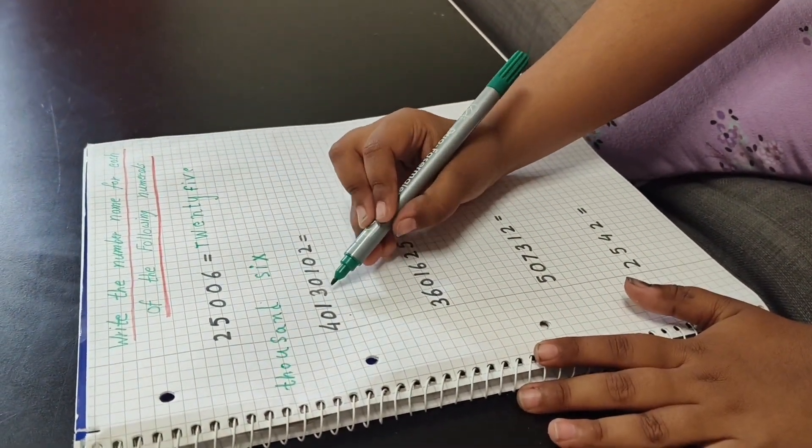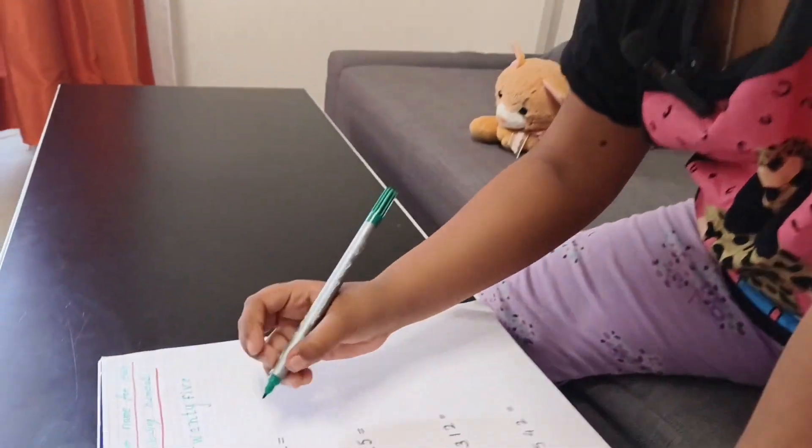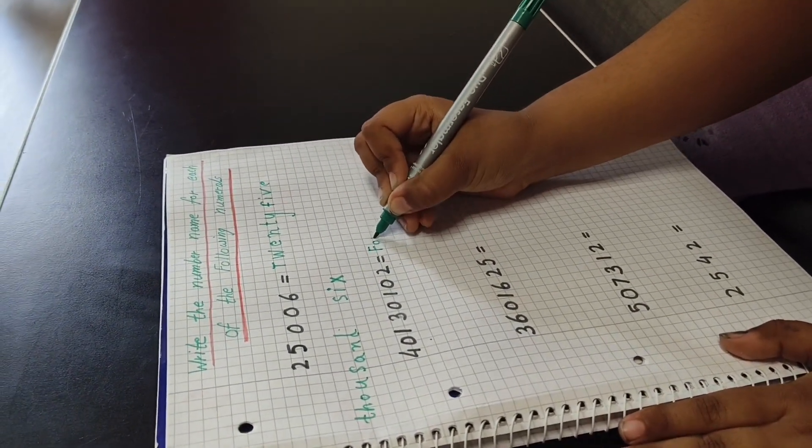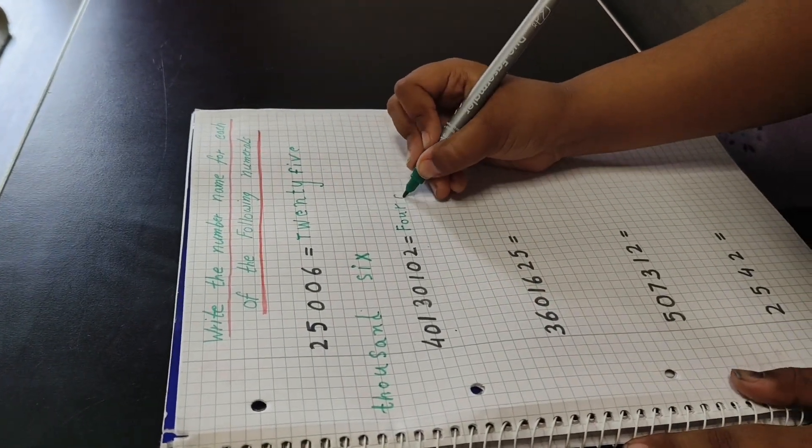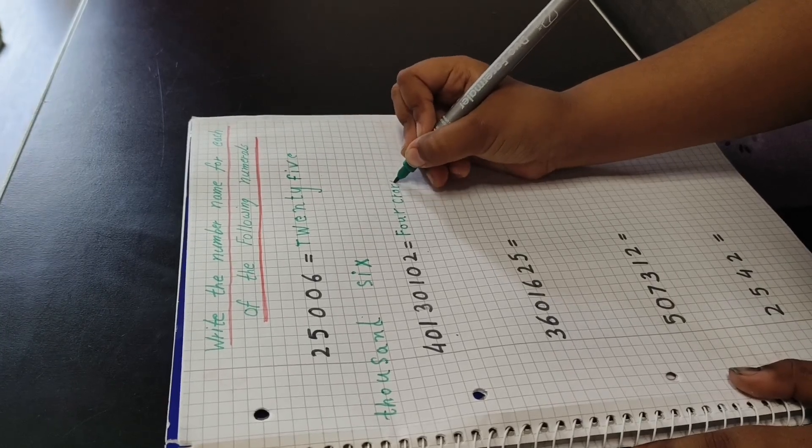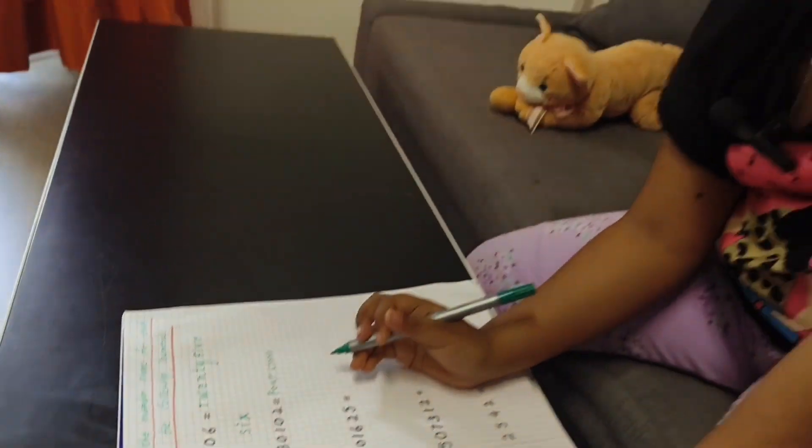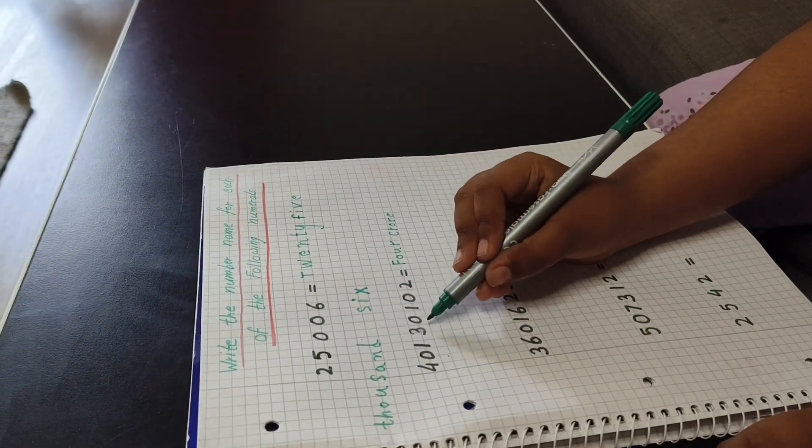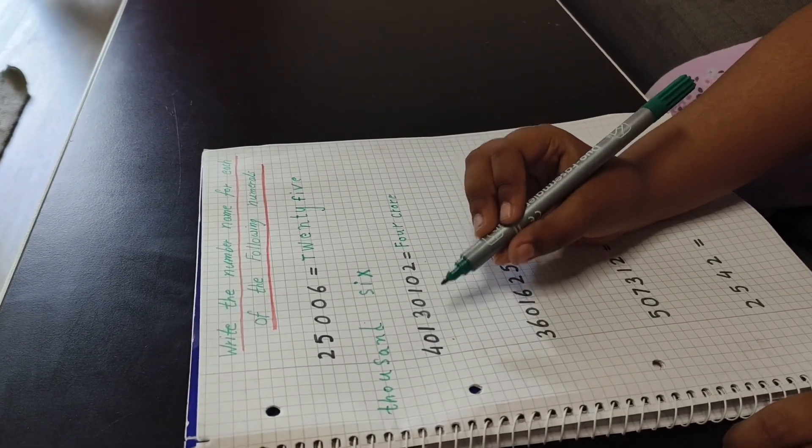First I will count, then I will add. So ones, tens, hundreds, thousands, ten thousands, lakhs. Four lakhs. F-O-U-R lakhs. Once, tens, hundreds, thousands, ten thousands, lakh. This is one lakh, okay.